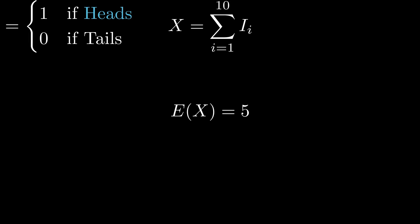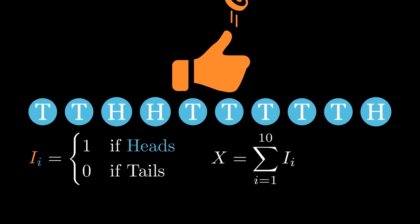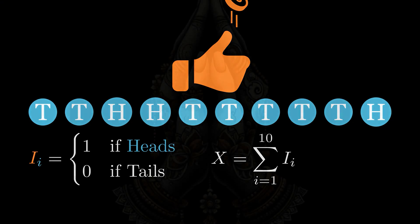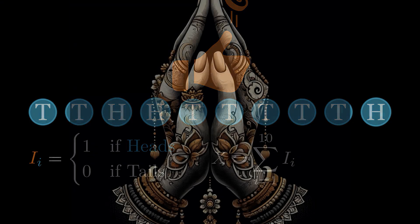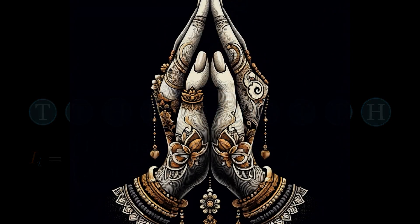And that's it. We have seen how indicator random variables are used to calculate the expected value of a random variable. I hope you enjoyed this video. In the next video we will look at another interesting concept in probability theory called Law of Unconscious Statistization.